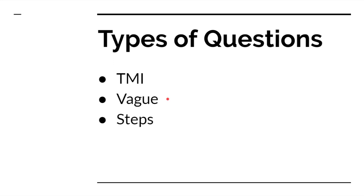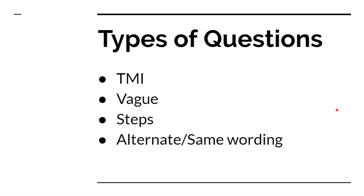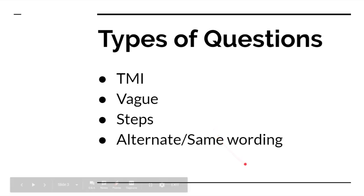Another type of question focuses on the steps of a process and what happens at each step. Make sure when you're studying that you not only memorize the steps, but also what happens during each step or phase. Another type uses alternate wording — taking a word and replacing it with something that has the same meaning, or even a word that looks totally opposite but means the same thing. On the flip side, you'll have questions with the same word used in a different context — for example, the word 'collision' appears in domain 3 when studying hashes, and also in domain 4 when studying collision domains in carrier sense multiple access.